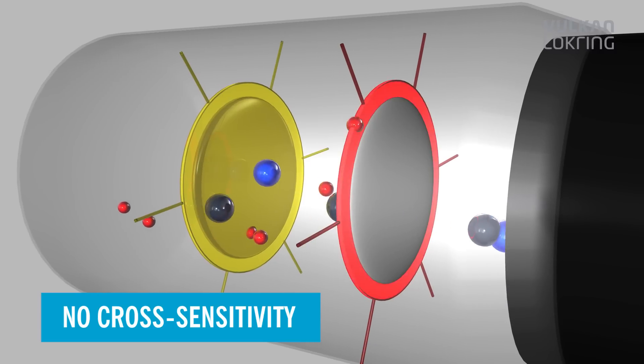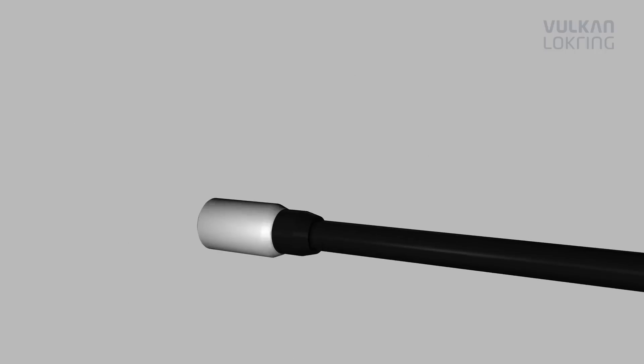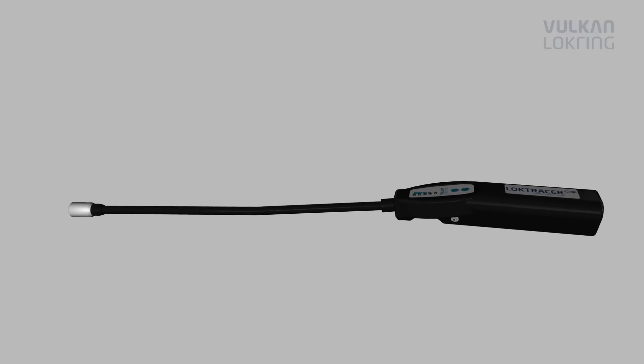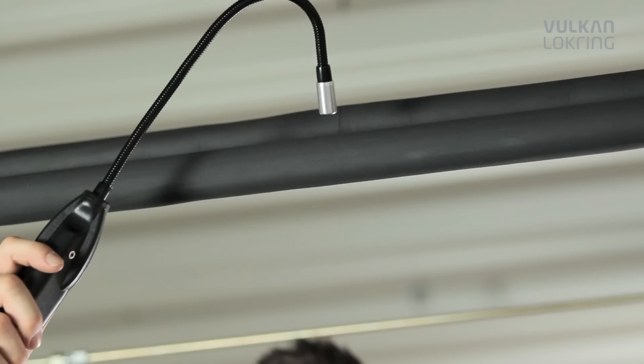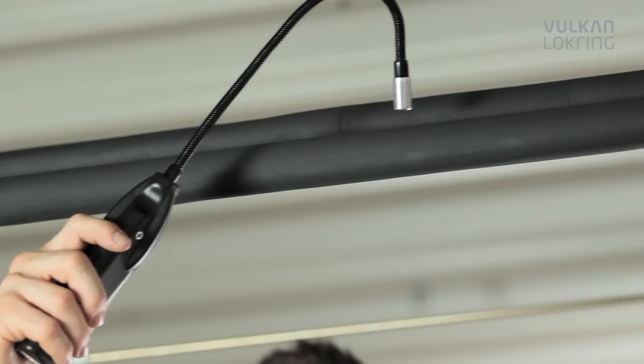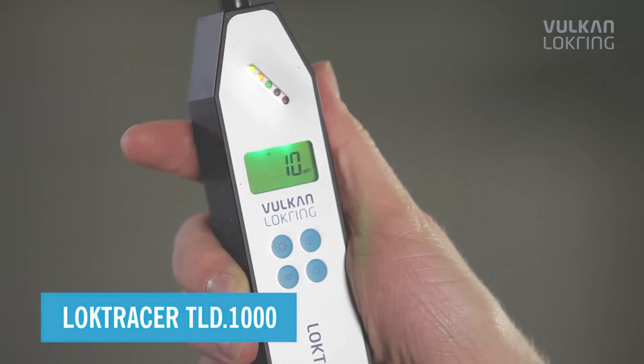Sensor control has been optimized to such an extent that the advantages of both sensors can be optimally used for leak detection. Always make sure the leak detector has a double sensor. This is the only way to guarantee absolutely reliable leak detection.